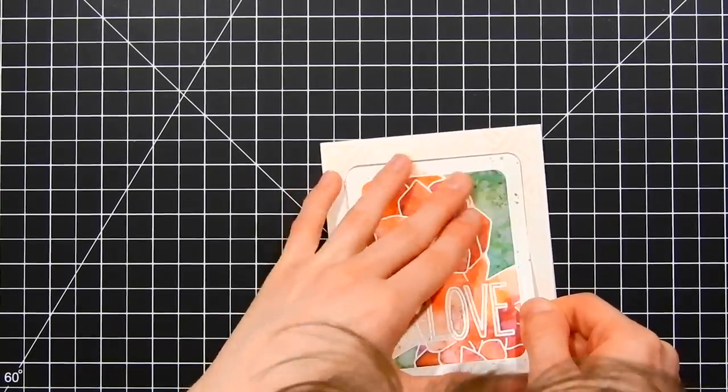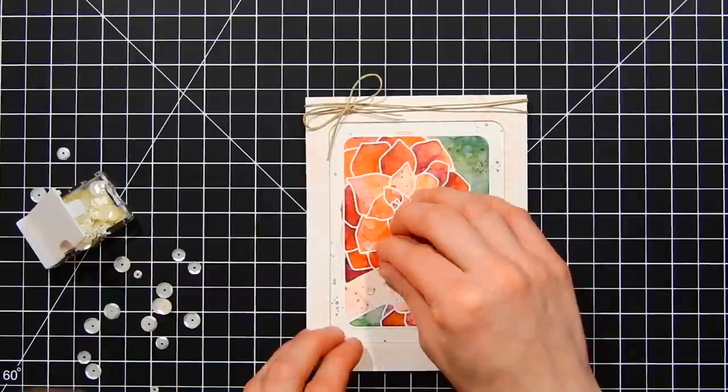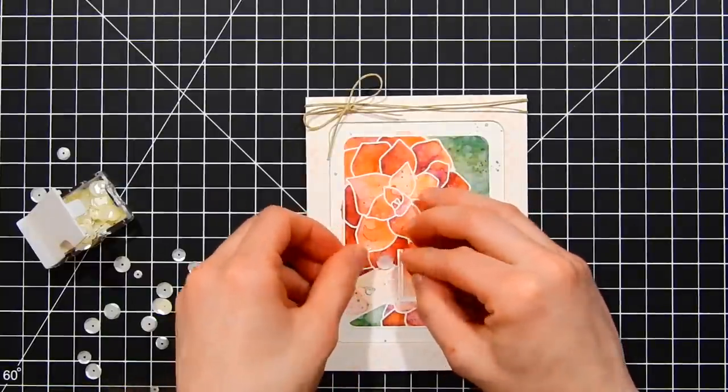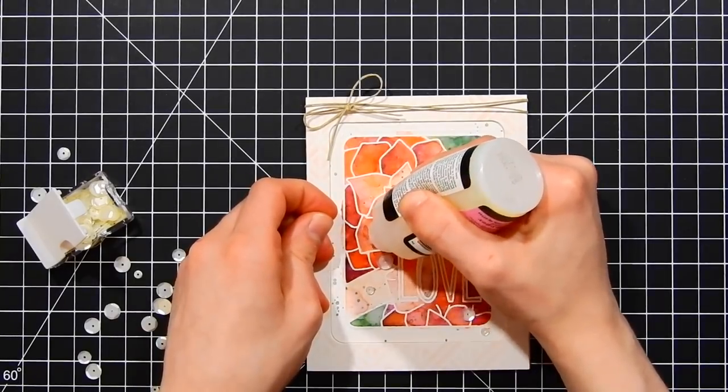To finish this off, I've added a little bit of hemp to the top portion of this card. And I'm also adding some pearl colored sequins to the card. This is a fun sequin mix from Neat and Tangled. I have all that linked below in the video description and also over on the Neat and Tangled blog. So I'll go ahead and glue those down.